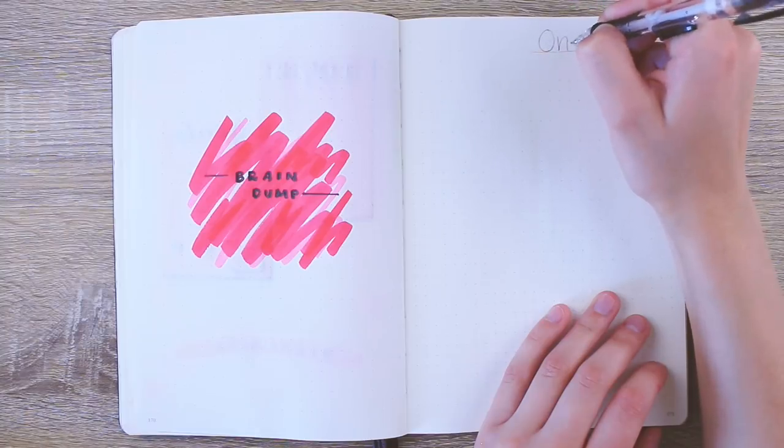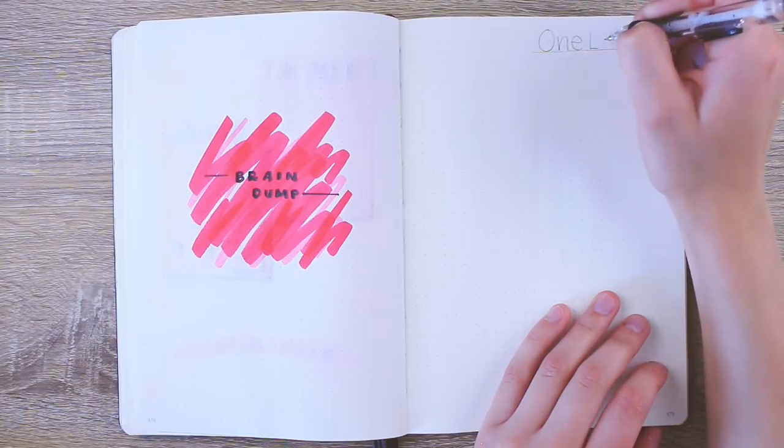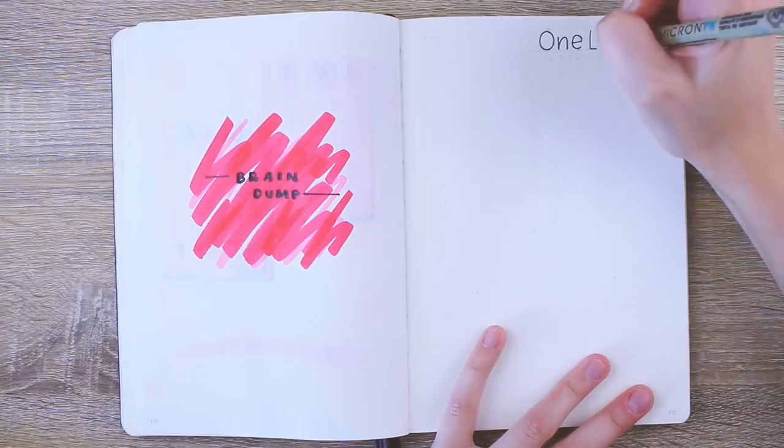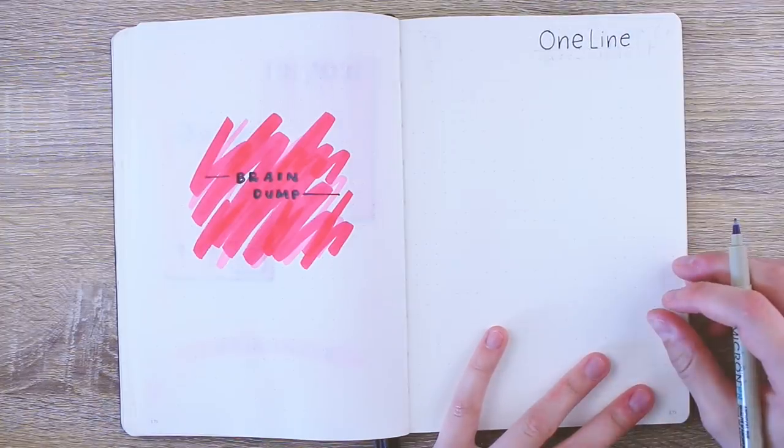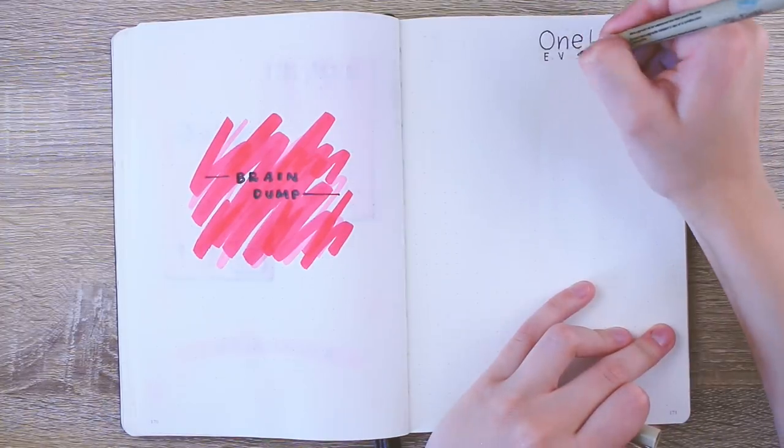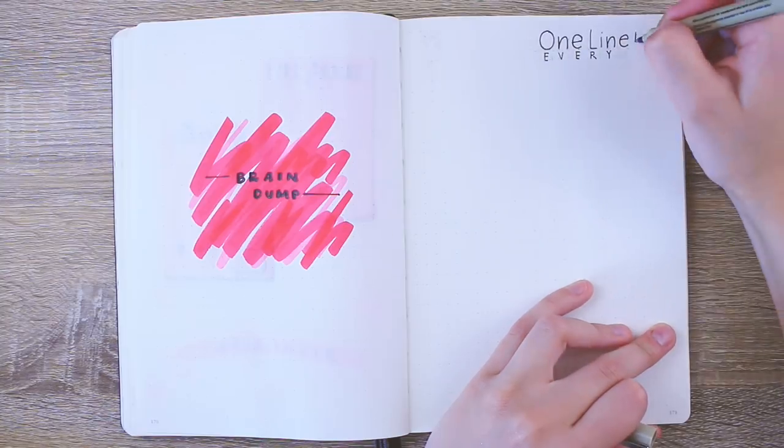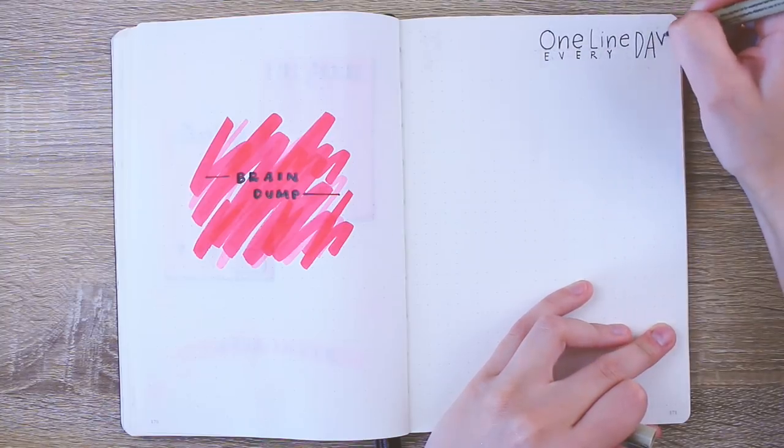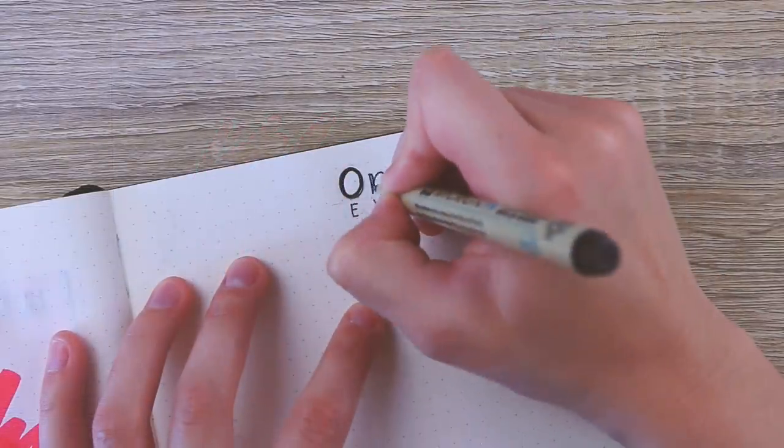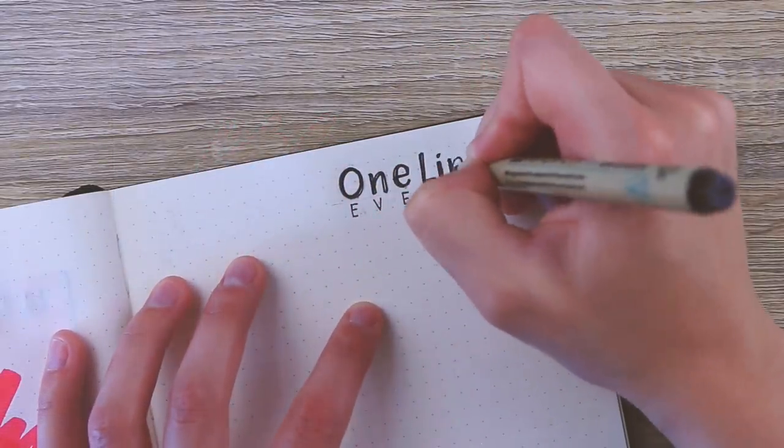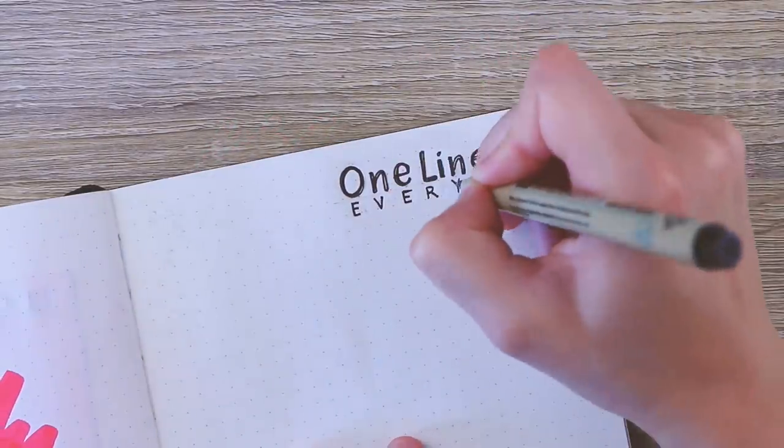But this next page, oh my gosh guys, I'm really proud of this. It's probably my favorite page I've ever made in any of my bullet journal setups. It's a one line a day page, which essentially is like a journaling page but it's just a little bit every day. So instead of journaling an entire page, you just do one line every single day or every other day or once a week.